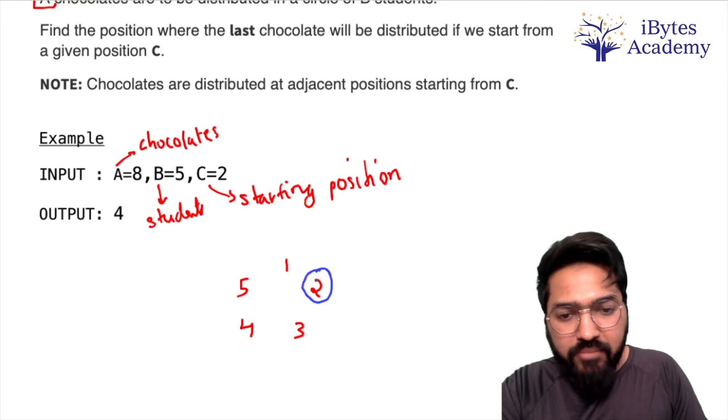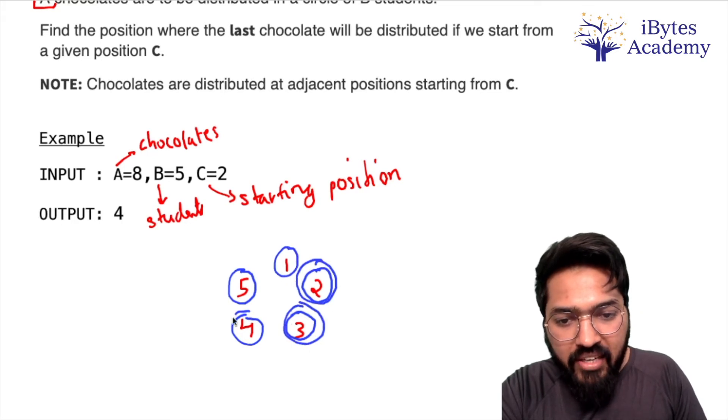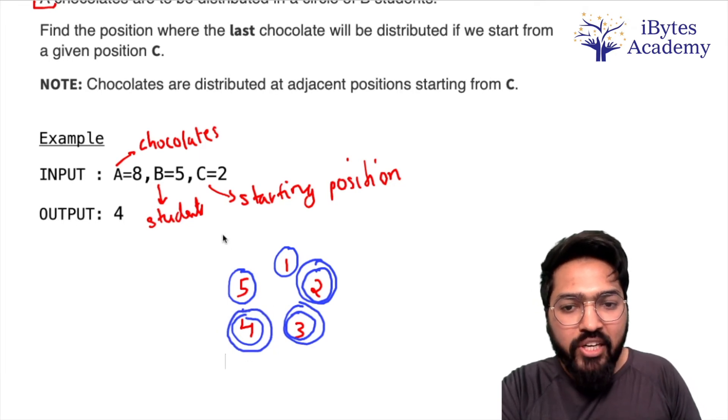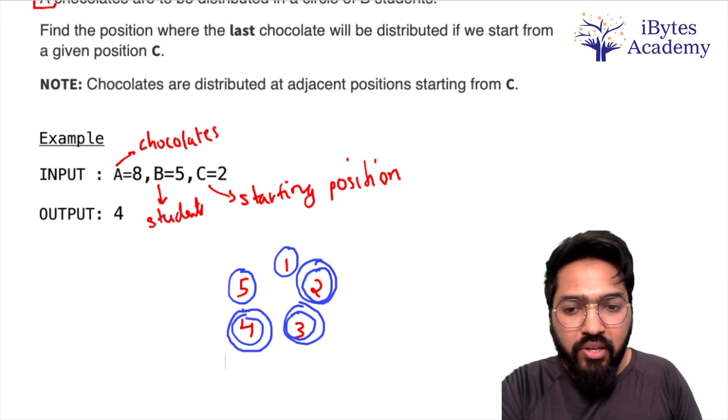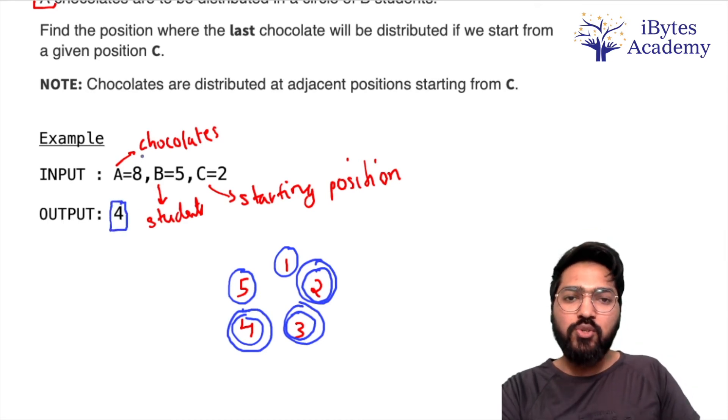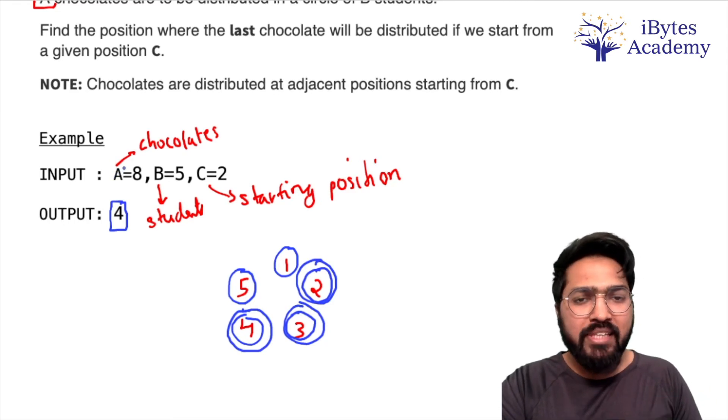So first chocolate, second chocolate, third chocolate, fourth chocolate, fifth chocolate, sixth chocolate, seventh chocolate, and eighth chocolate. The eighth chocolate, that is the last chocolate, will be distributed to student number 4, so 4 is going to be our output. This is the problem - we have to tell which student gets the last chocolate. I hope the problem is clear.